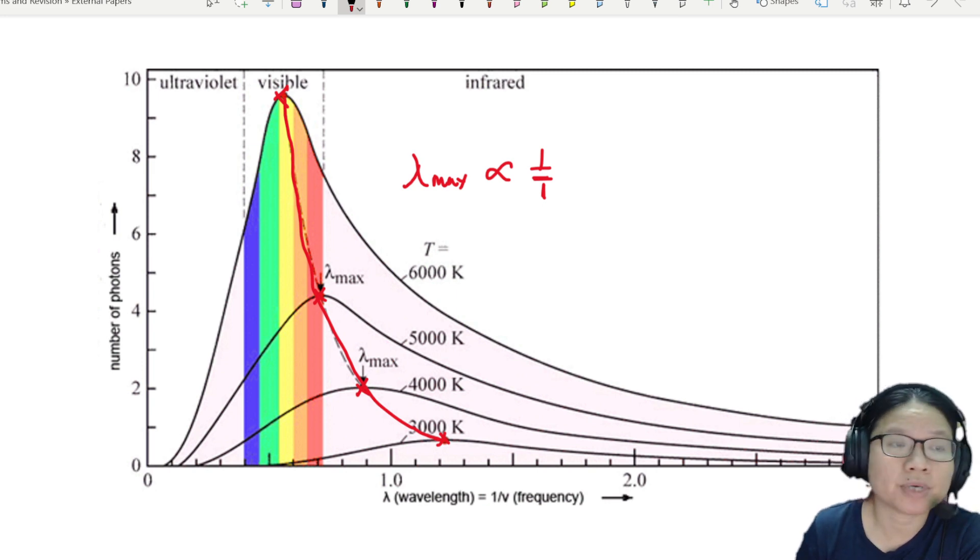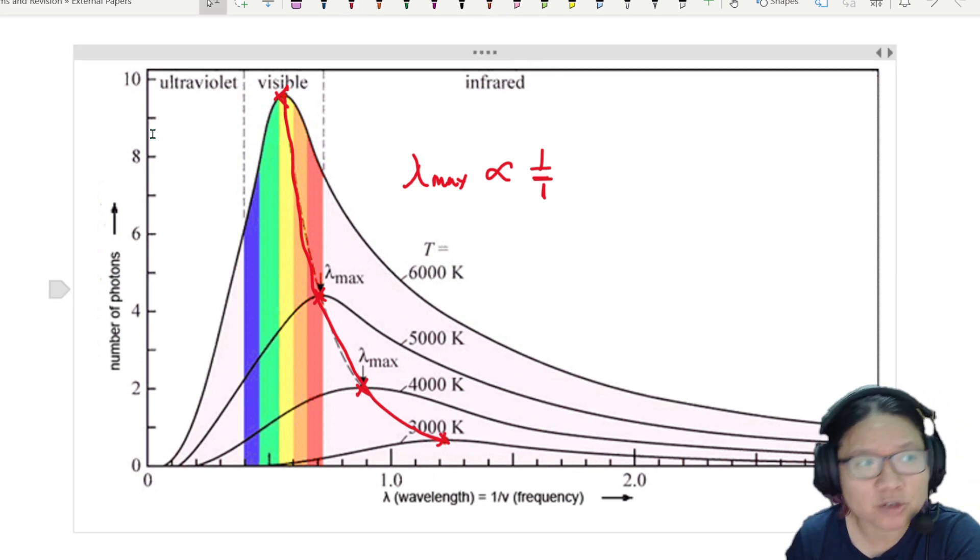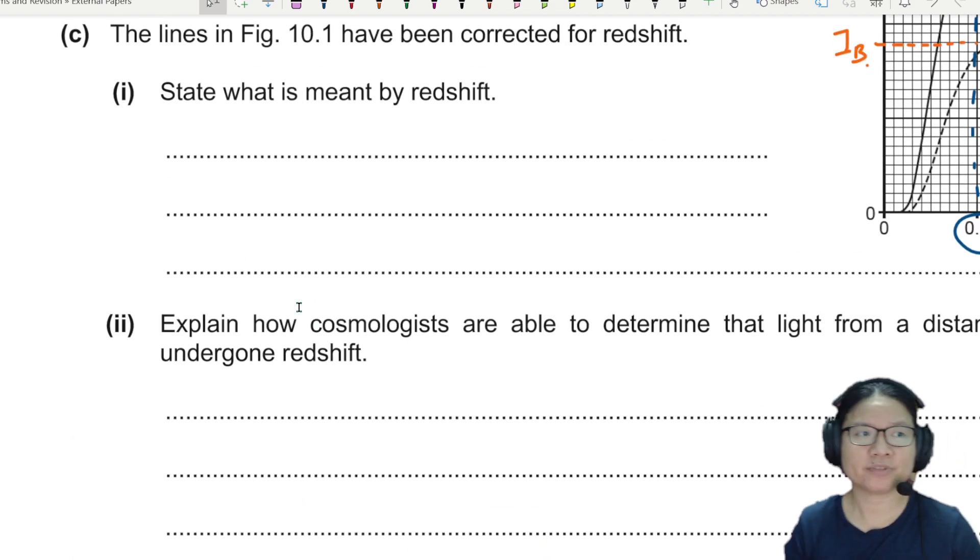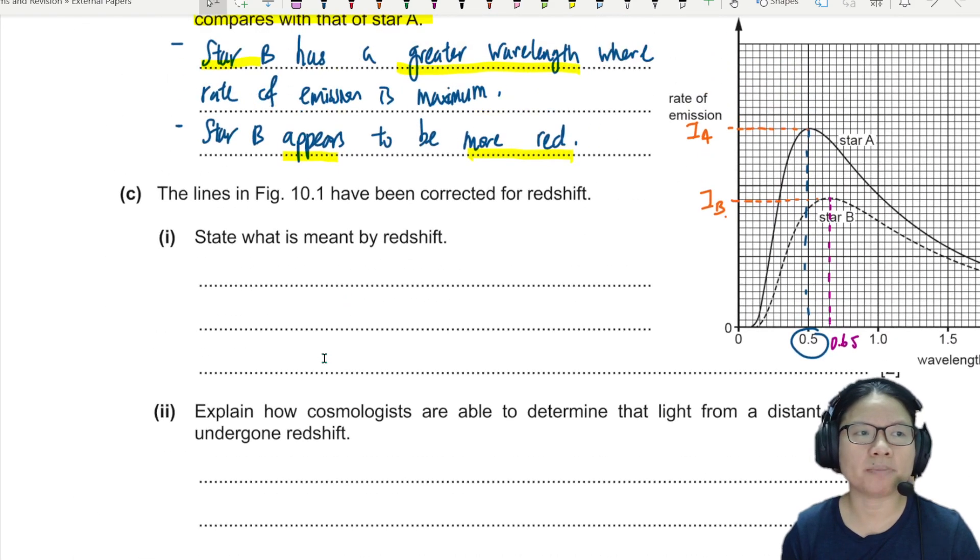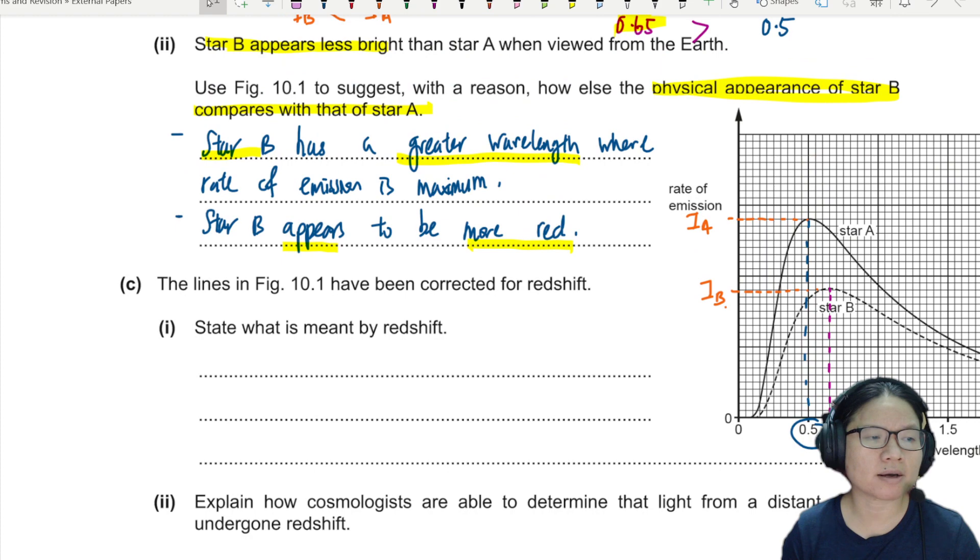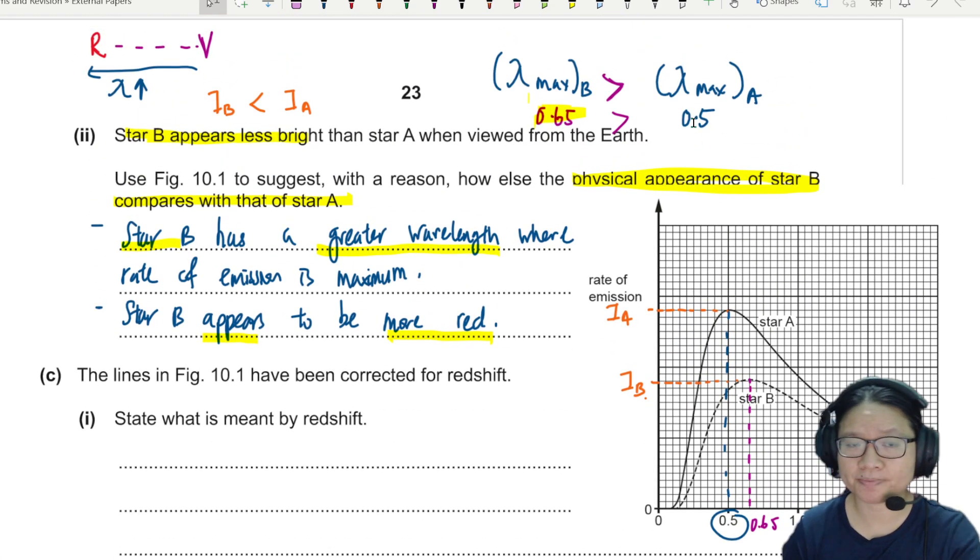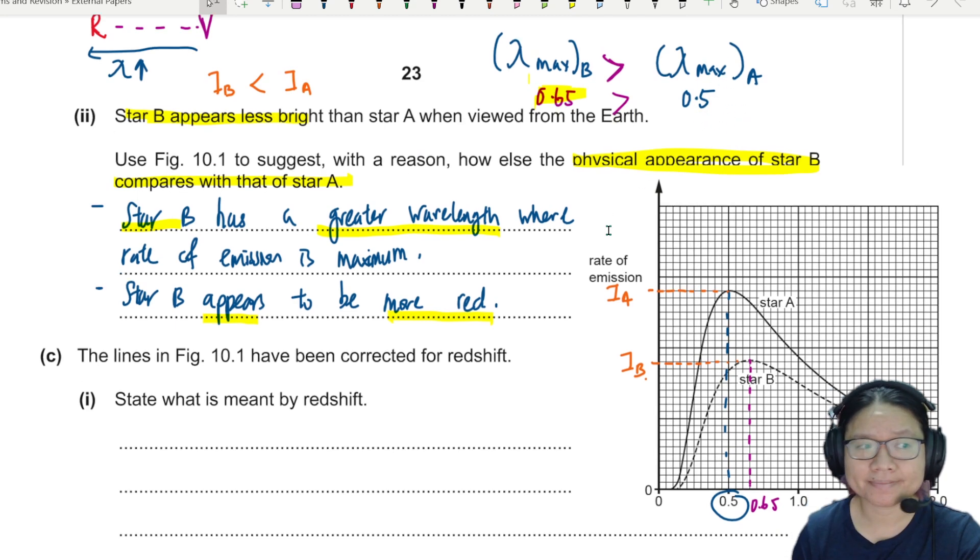So here temperature is dropping linearly. Every curve is for 1000 Kelvin drop in temperature. So if I join all the lambda max, I get like an inversely proportional shape. Of course, some of the light we cannot see, the infrared zone or the ultraviolet zone. But regardless, if I can see that light, it will appear to be red, redder. All right. So that's what it means by the appearance of the star. Because this is still well within the visible range. 650 nanometer and 500 nanometer. Still can see.